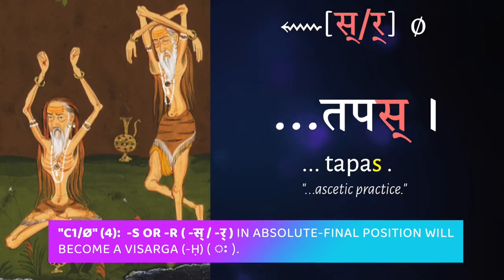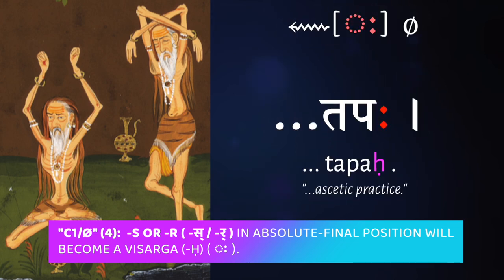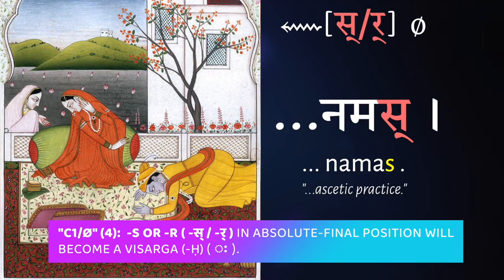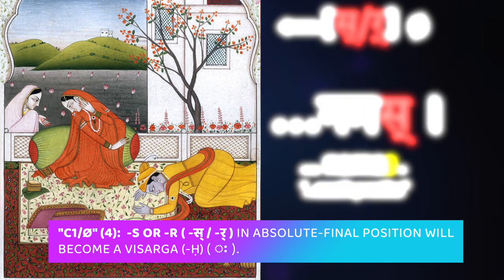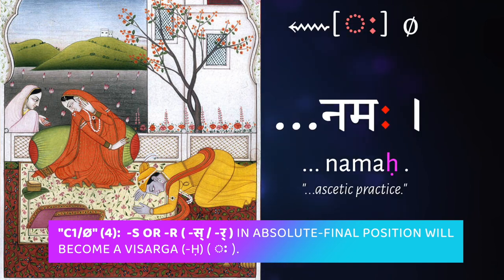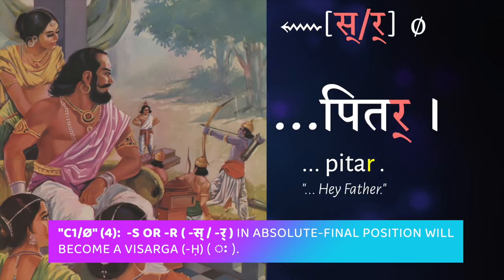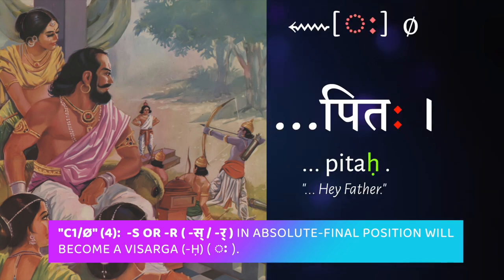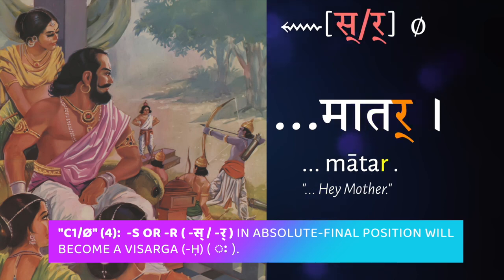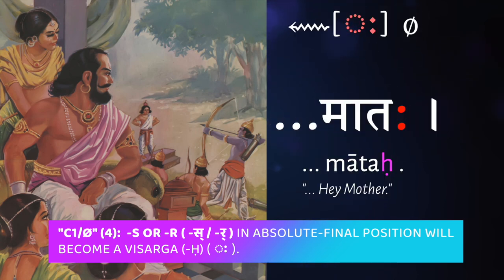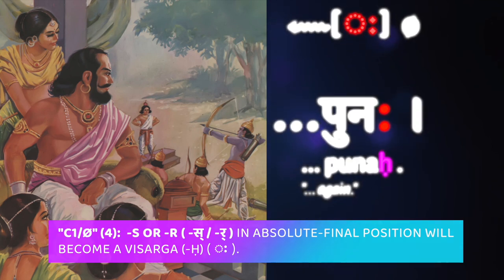So if we have the word tapas, meaning ascetic practice, when it comes at the end of a sentence it becomes tapaha. Namas, meaning bow, becomes namaha — we've had that: namo namaha. For words that end in the ra-kara: pitar meaning father becomes pitaha; mātar meaning mother becomes mātaha; and punar meaning again becomes punaha.